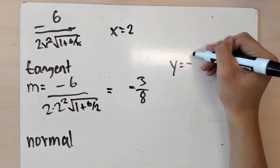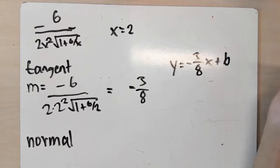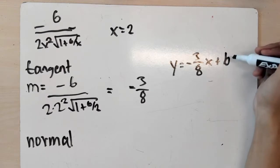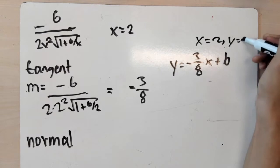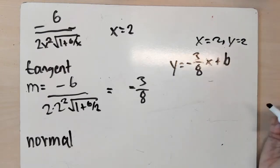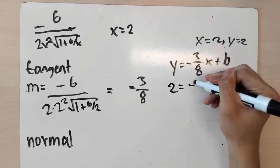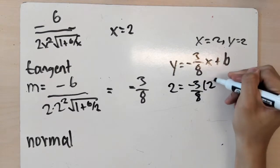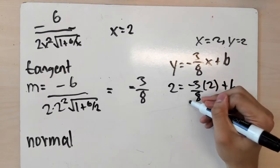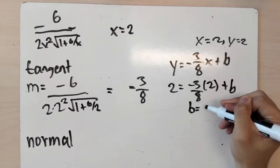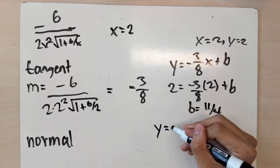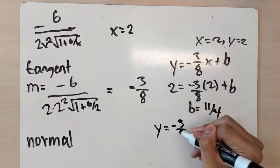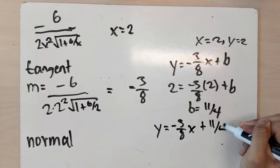So we know y equals negative 3 over 8 times x plus b. We want to find the constant b. We know that when x equals 2, y equals 2 — you can verify this with the original function. Plugging in: 2 equals (negative 3 over 8) times 2 plus b, so b equals 11 over 4. Therefore the tangent line is y equals negative 3 over 8 times x plus 11 over 4.